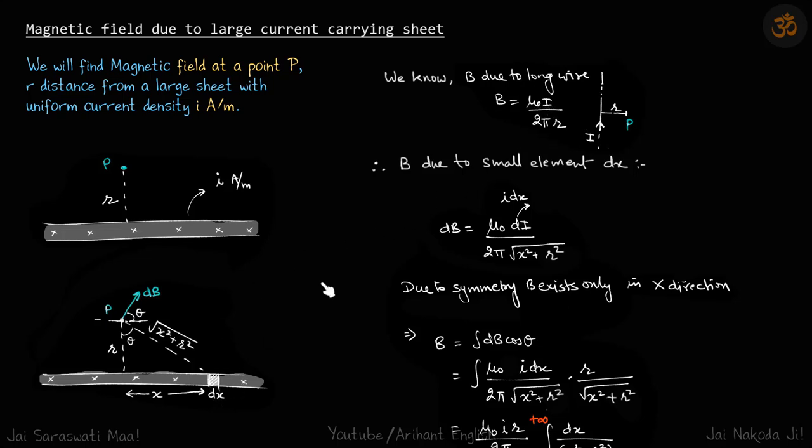Because of this dx element, the distance R here is root x squared plus R squared. The small current di is dx times i, where i is in amperes per meter, so i times dx is the value of current. We will write this formula and replace i by di which is i dx, and replace R by root x squared plus R squared.